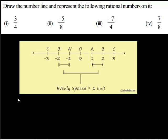Let us move to the next question that is negative 5 upon 8. We know that positive rational numbers will lie to the right of the point O and the negative rational numbers will lie to the left of the point O.